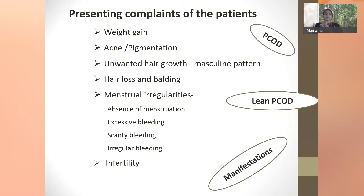Some patients present with scanty bleeding — only spotting for one or two days — or irregular bleeding, polymenorrhea, or polymenorrhagia, where intervals vary between 15 days and three months. Some patients may not present with many features but are diagnosed with PCOD only when they consult for infertility, more so in cases of lean polycystic ovarian disease.